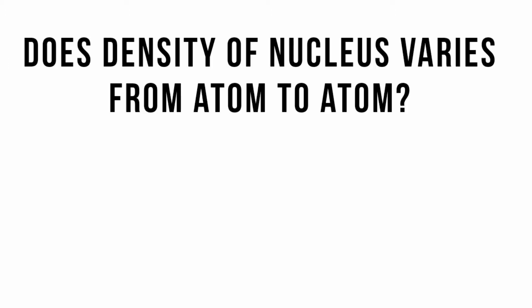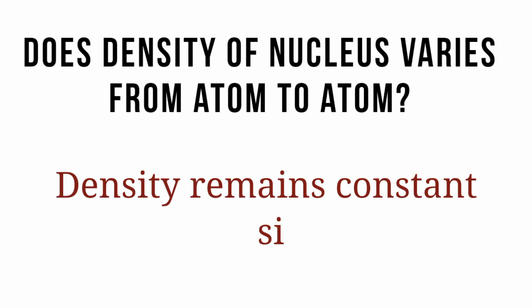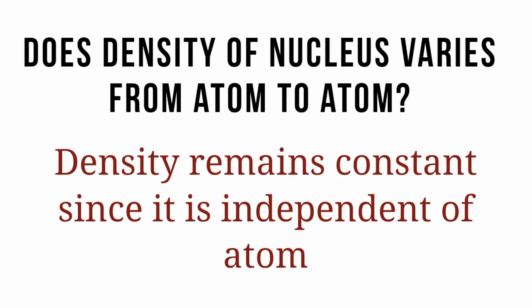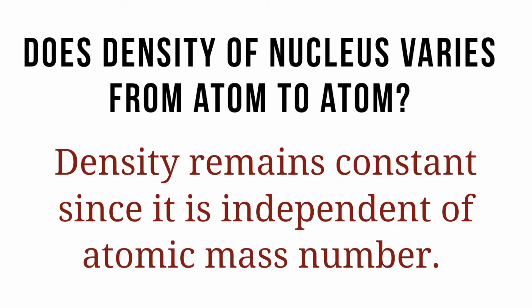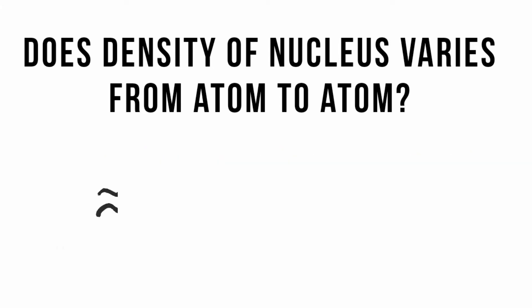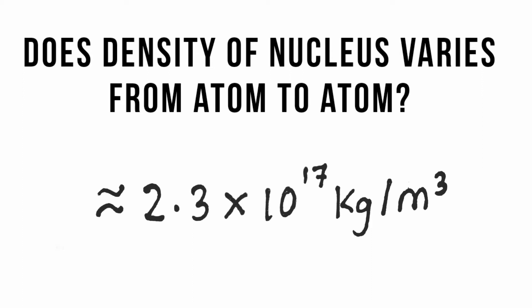Does the density of the nucleus vary from atom to atom? The answer is no — the density remains constant since it is independent of the atomic mass number, and the value is approximately 2.3 × 10¹⁷ kg/m³.